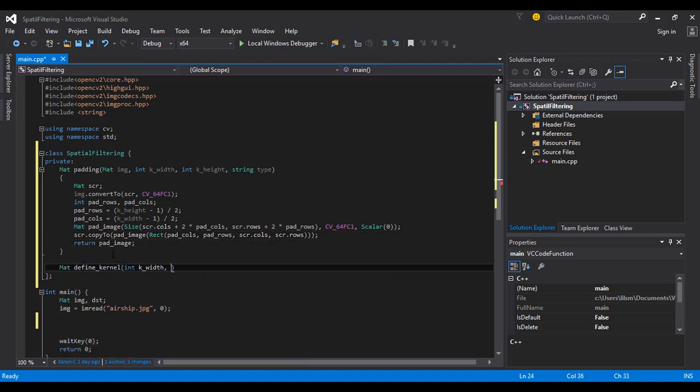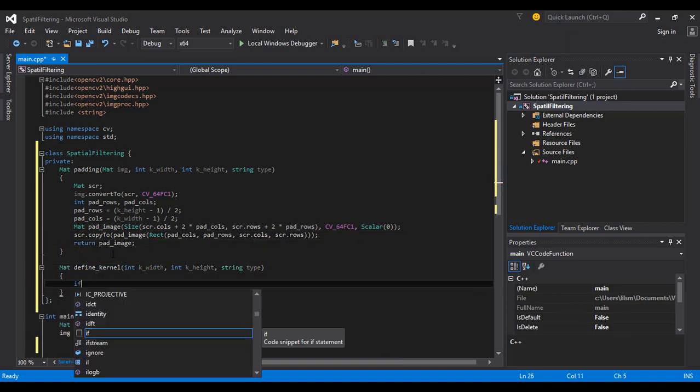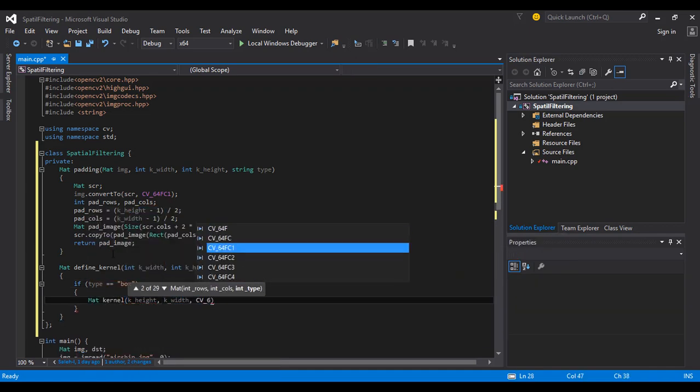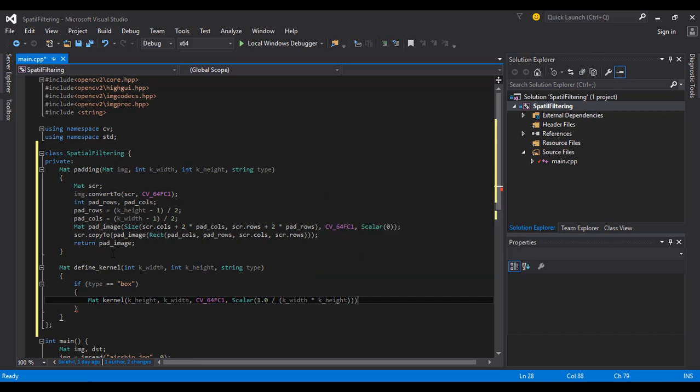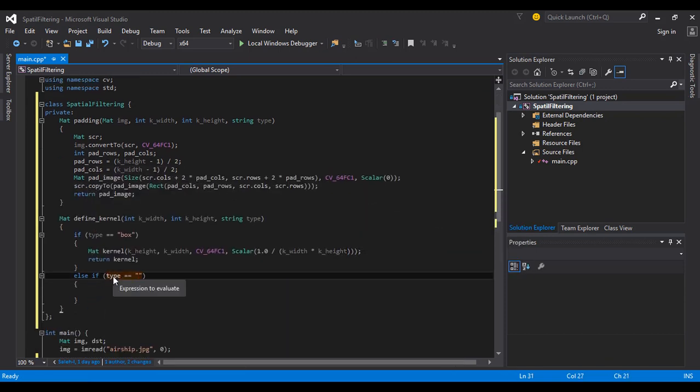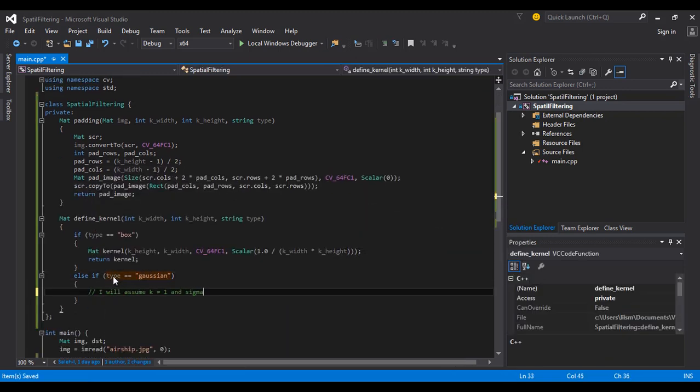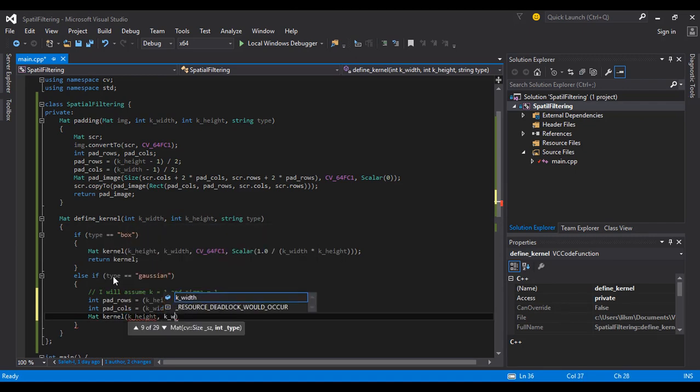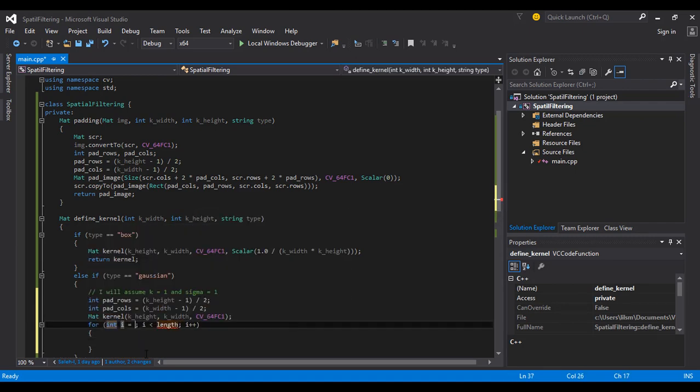The next member function is define kernel. For the box kernel, all elements are 1 over the number of elements in the kernel. For Gaussian, we have to use the Gaussian equation. Here I assume that k = 1 and sigma = 1.